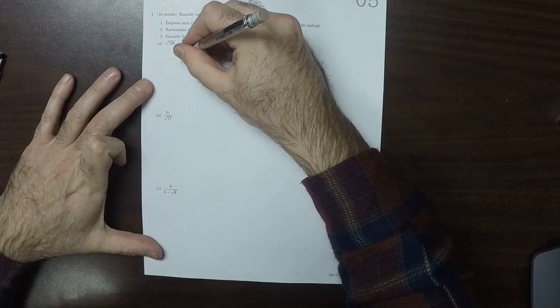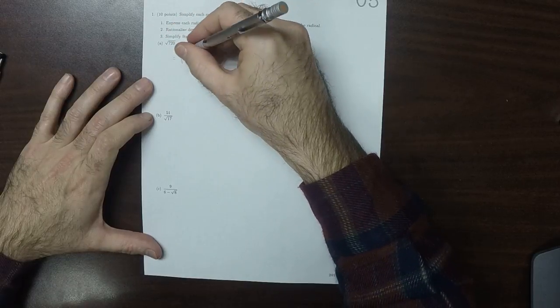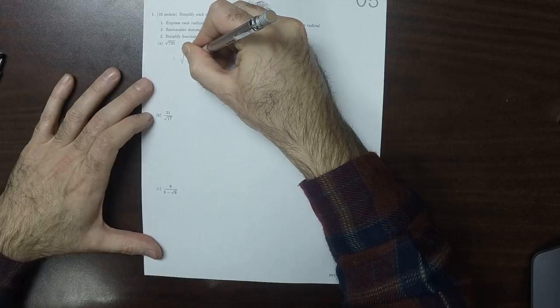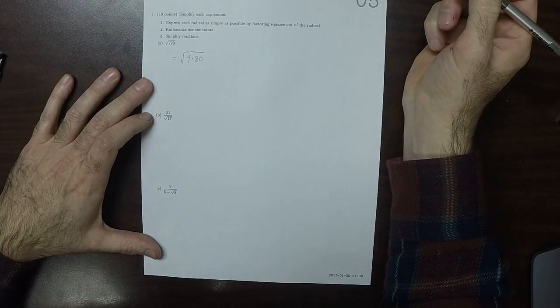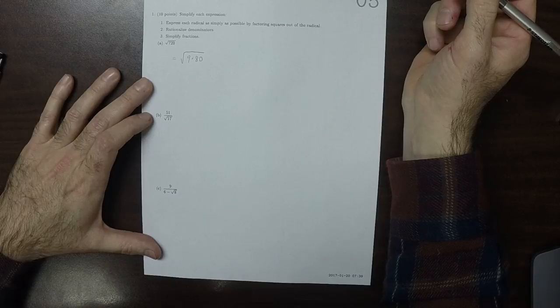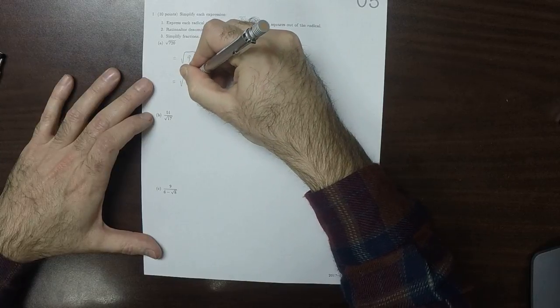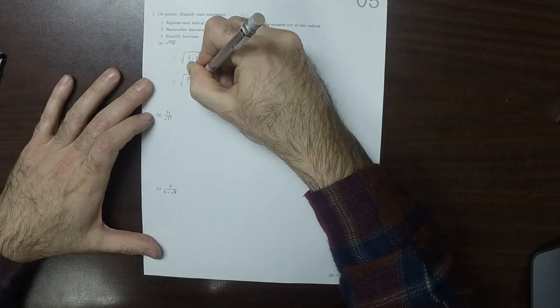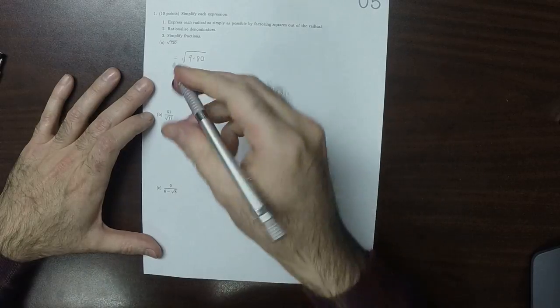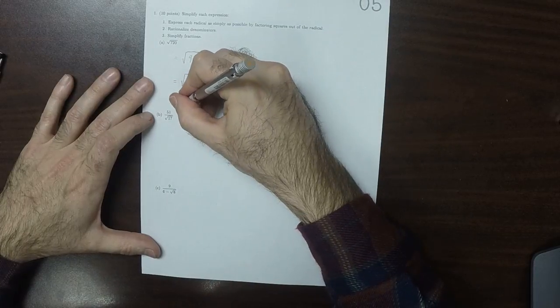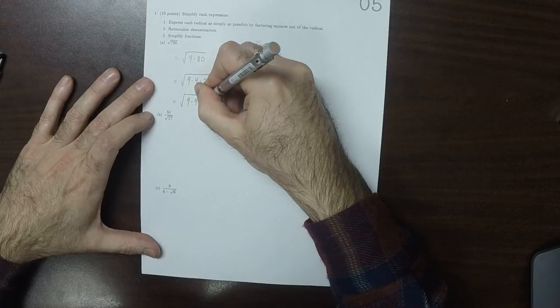So in the first place, I can see that 720 has a factor of 9 in it. So that would be 9 times 80. And then 80 has a factor of 4 in it, at least. So that would be 9 times 4 times 20. And then 20 has another 4 in it. So that would be 9 times 4 squared times 5.